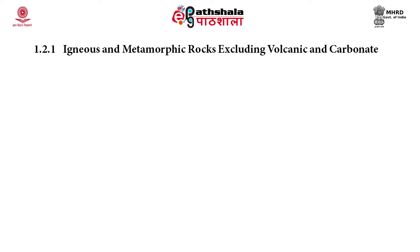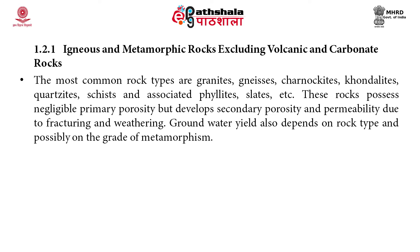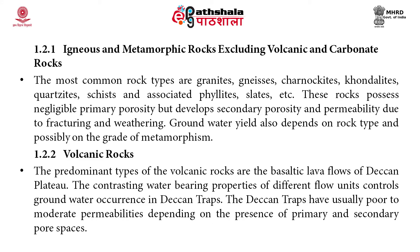The most common rock types are granite, charnockites, quartzites, and associated phyllites and slates. These rocks possess negligible primary porosity but develop secondary porosity and permeability due to fracturing and weathering. Groundwater yield also depends on rock type and possibly on the grade of metamorphism. The predominant types of volcanic rocks are the basaltic lava flows of the Deccan Plateau. The contrasting water-bearing properties of different flow units control groundwater occurrence in Deccan traps, which have usually poor to moderate permeability depending on primary and secondary pore spaces.